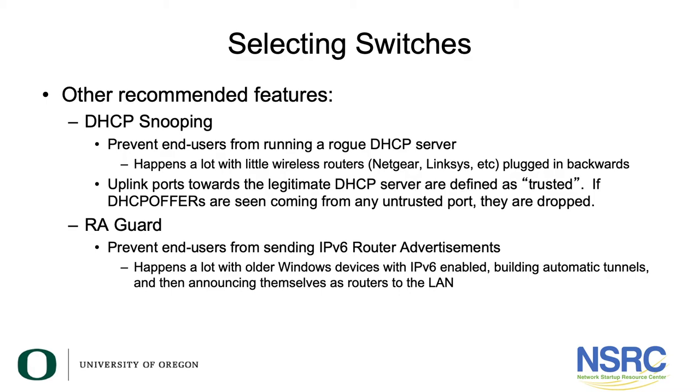The second feature we would like to see is RA Guard. With more and more campuses now deploying IPv6, this prevents end users from sending IPv6 router advertisements out onto the campus network. This happens a lot with Windows devices which have IPv6 enabled — if they don't get a v6 address, they will try to build an automatic tunnel to somewhere configured in the kernel that actually has v6 connectivity.